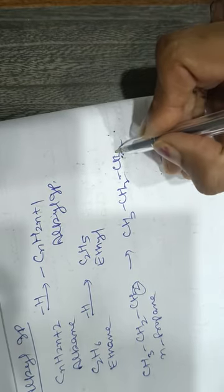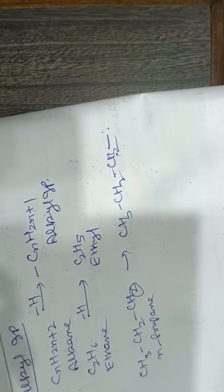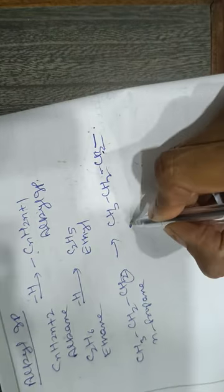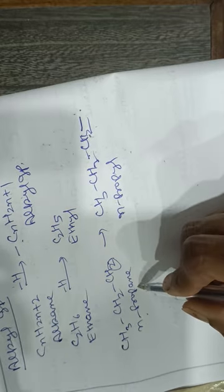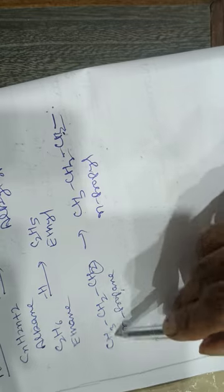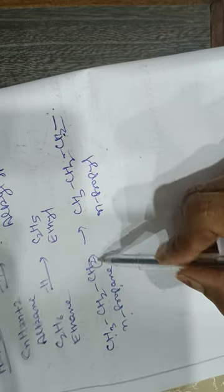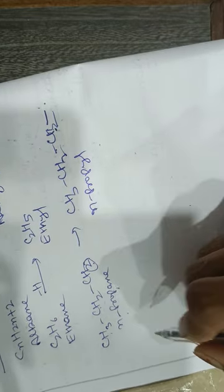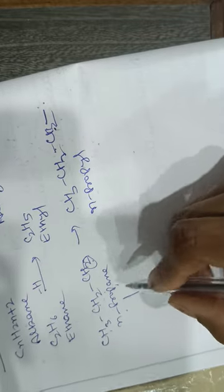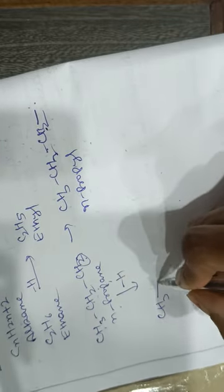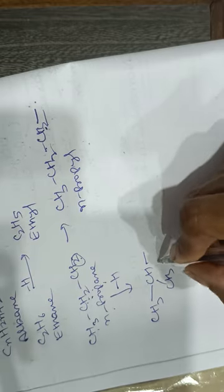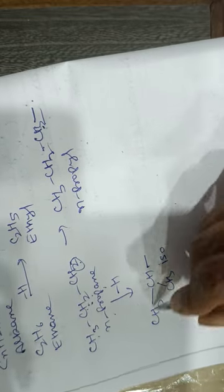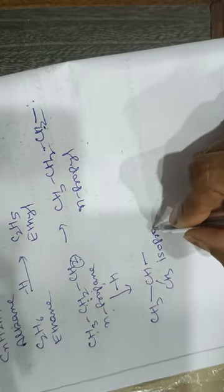The normal propyl group requires one bond because it has an incomplete valency. But if you remove hydrogen from the middle carbon of propane rather than the terminal carbon, then we get CH3–CH–CH3 with a free bond, and this is called the isopropyl group. So in the case of propane, we have two possible groups: normal propyl and isopropyl.